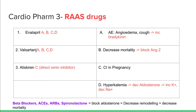Valsartan is not an ACE inhibitor — it's your ARB, angiotensin receptor blocker. Valsartan does essentially the same four things as ACE inhibitors: it causes angioedema and cough (slightly lower incidence), helps decrease mortality, is contraindicated in pregnancy, and causes hyperkalemia. The last category is a direct renin inhibitor called aliskiren. Aliskiren doesn't really have any effect on aldosterone, so we don't see the mortality-decreasing benefit, but it is contraindicated in pregnancy.